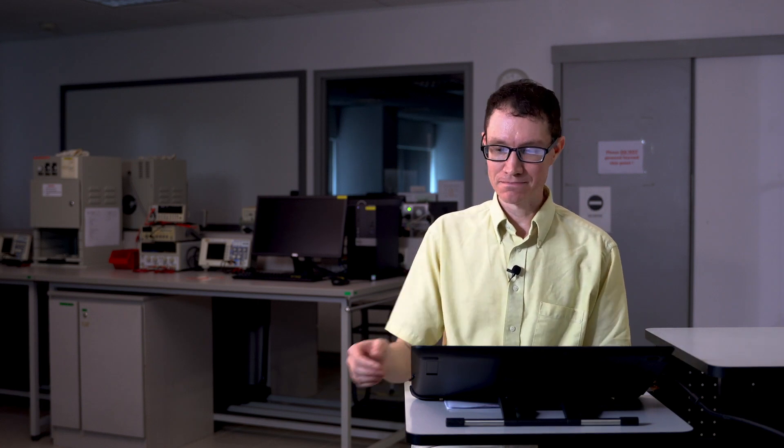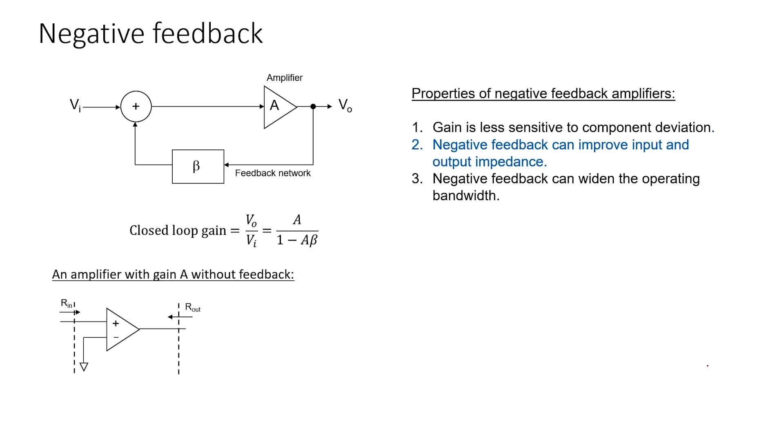A second useful property of negative feedback is that it can improve both input and output impedance. For example, assume that I have an amplifier that has a nominal gain of A without any feedback at all. This amplifier, if it's an op amp, would have a very high input impedance and a very low output impedance. However, both the input impedance and the output impedance can be improved by using negative feedback. What we can do is effectively sacrifice some of the high gain in order to improve the input or output impedance.